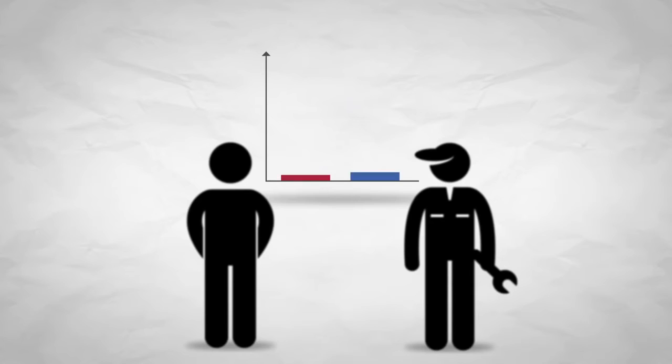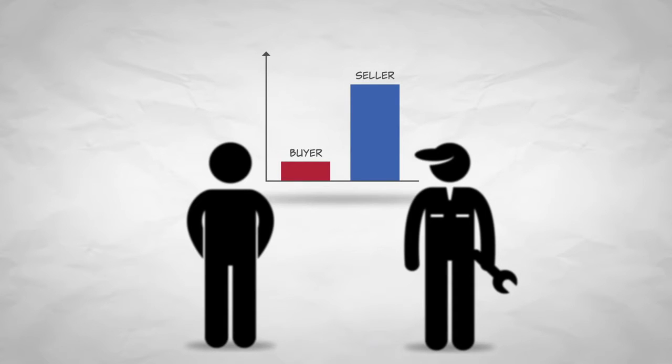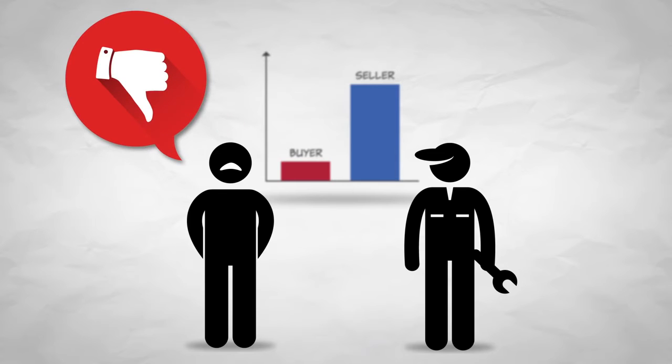As we'll see, asymmetric information can challenge markets and sometimes cause them to fail. When one party to an exchange has an information advantage, they may have an incentive to use that advantage to exploit the other party, and that temptation to exploit is called moral hazard.